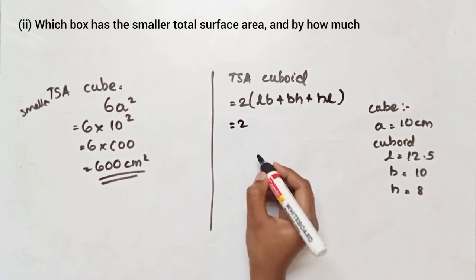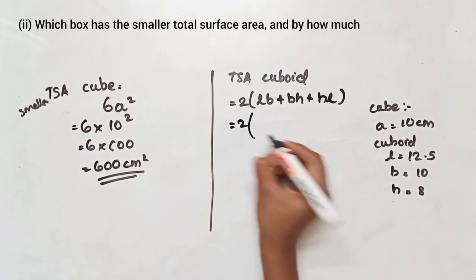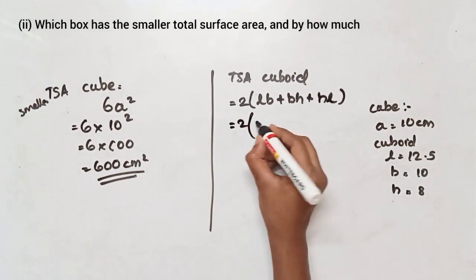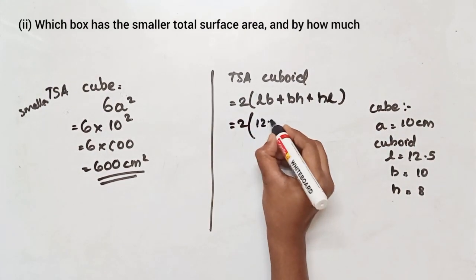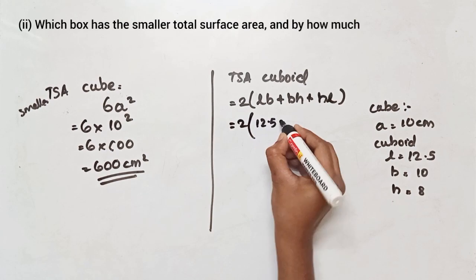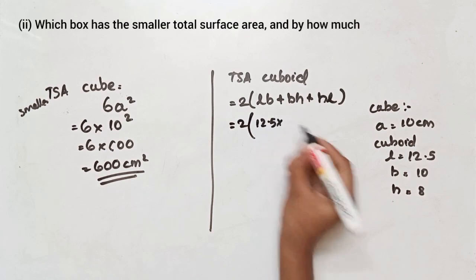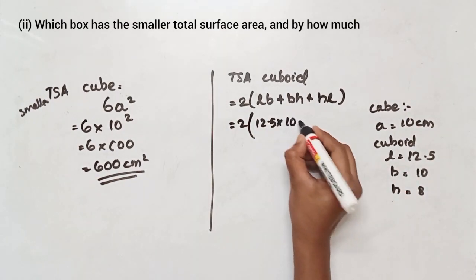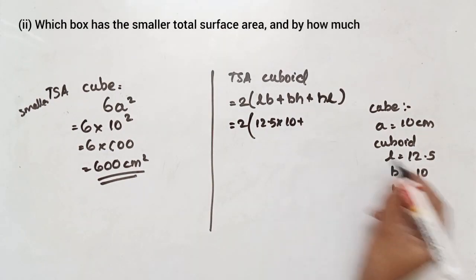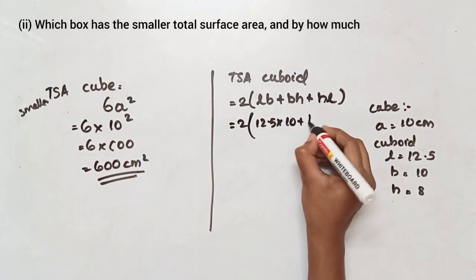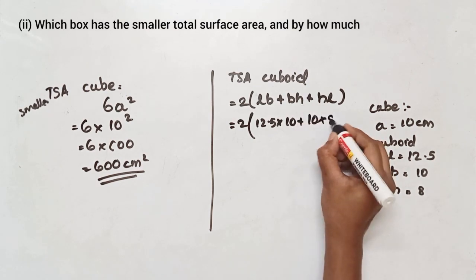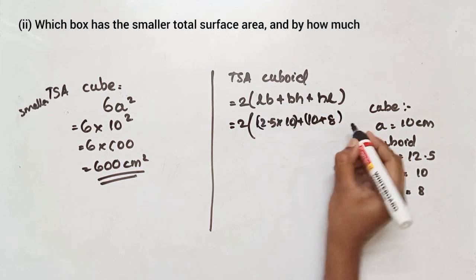We substitute the values: length is 12.5, breadth is 10, and height is 8.